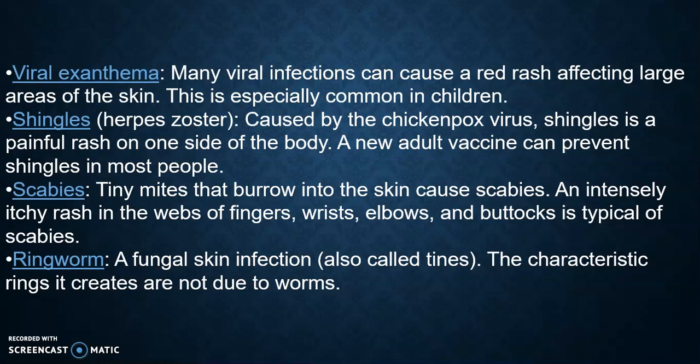Shingles, or herpes zoster, is caused by the chickenpox virus. It is a painful rash on one side of the body, and a new adult vaccine can prevent shingles in most people. Scabies — tiny mites that burrow into the skin cause scabies, producing an intensely itchy rash in the webs of fingers, wrists, elbows, and buttocks. Ringworm is a fungal skin infection, also called tinea. The characteristic ring shapes are not due to worms.